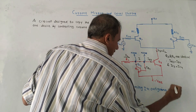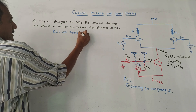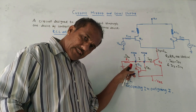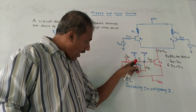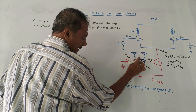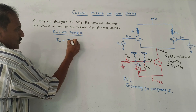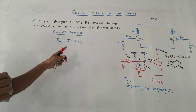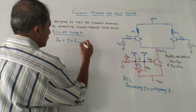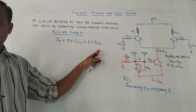If we apply KCL at node B, the incoming current is I2, which is the current flowing through resistor R2. The outgoing currents at node B are I and IC4. So we can write: I2 equals I plus IC4. Since IC4 equals IC3, this equation becomes I2 equals I plus IC3.